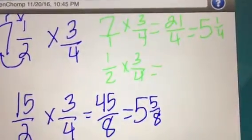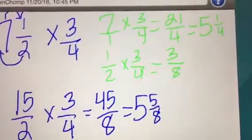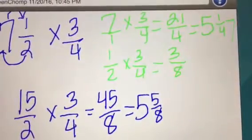And then here I end up with one times three is three. Two times four is eight. And then I just need to add them together.